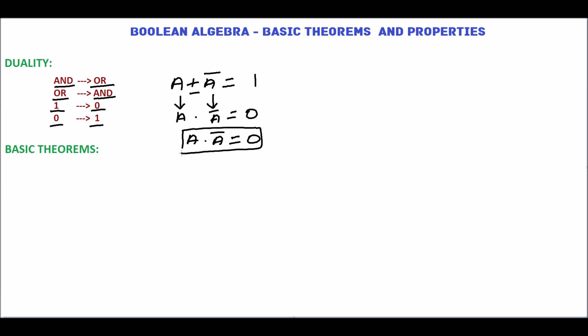We also have a Boolean relation a · 1 = a. From this we can derive another Boolean relation: change dot to plus and 1 to 0, giving a + 0 = a. So the duality is a very important property in Boolean algebra.